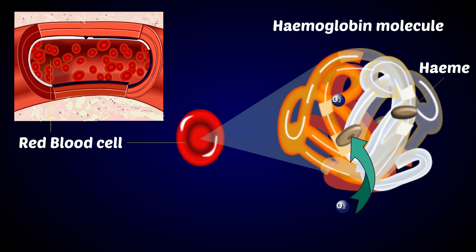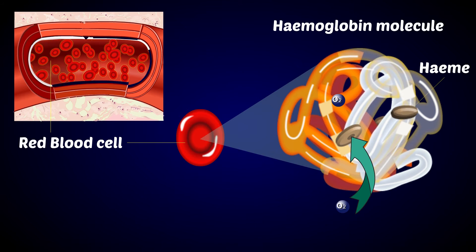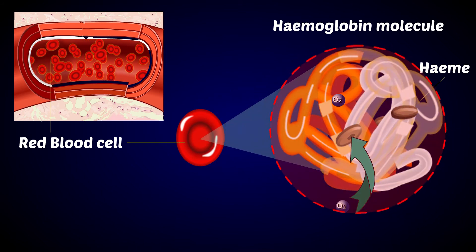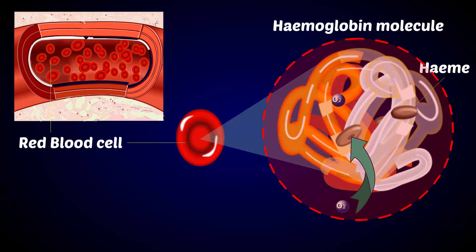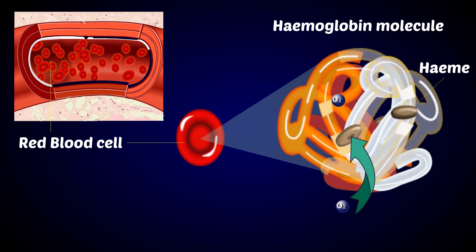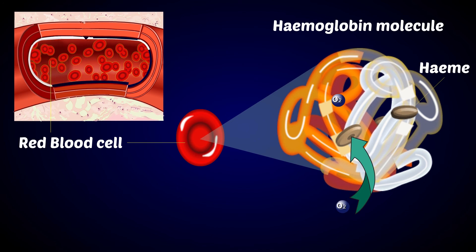The main component of RBCs is a pigment protein called hemoglobin, which gives blood its red color. Hemoglobin transports oxygen, and its oxygenated form is called oxyhemoglobin.